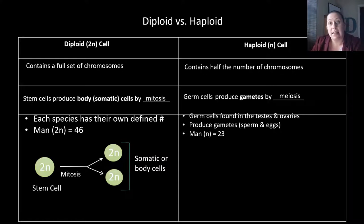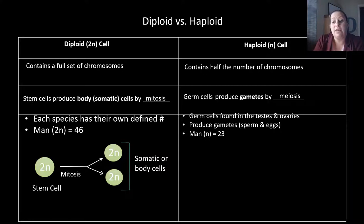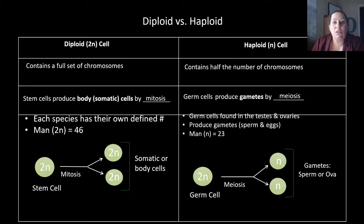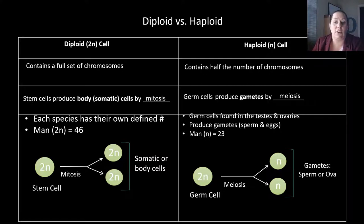For humans, N is represented by half: when 2N is 46, N is going to be 23 — it's half the chromosomes. Half of 46 is 23. If we look at this example, you have 2N going through the process of meiosis, and when they divide, they have half the number of chromosomes. This process is simplified here; we will go into more detail later.